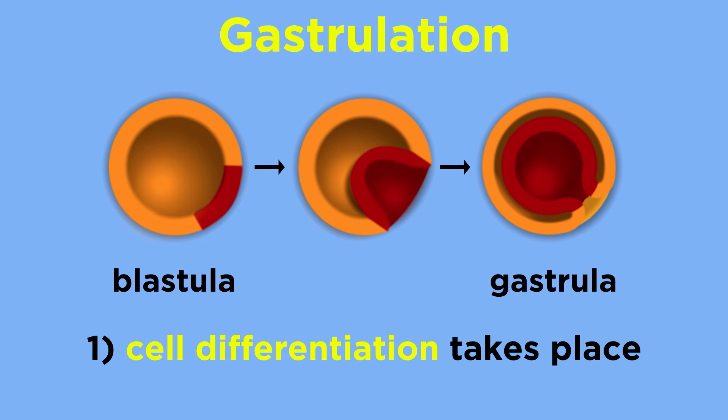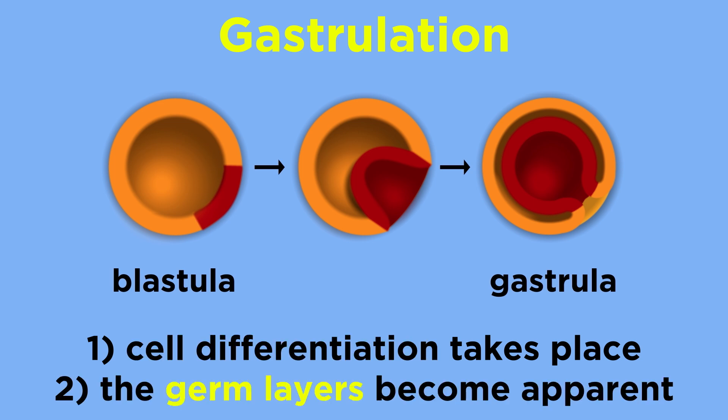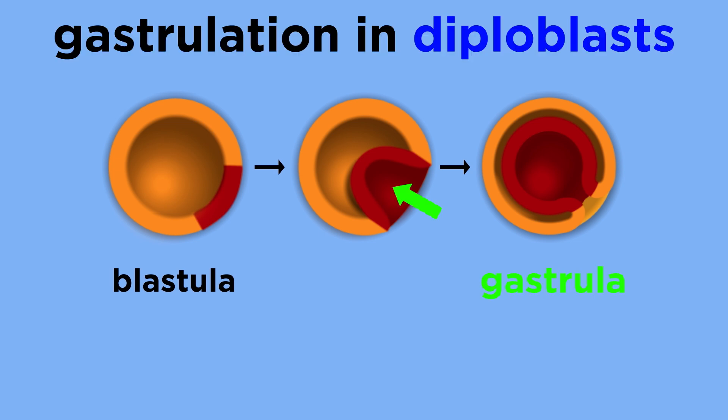In most animals, the cells of the blastula then begin to shift and differentiate into cell groups that will become specialized for different functions within the animal. It is during this cellular differentiation phase, called gastrulation, where the germ layers become apparent.